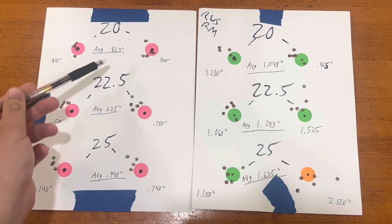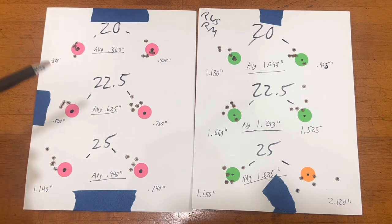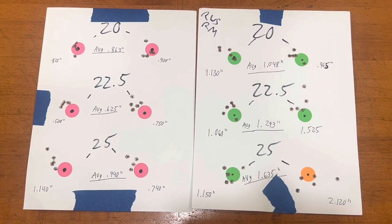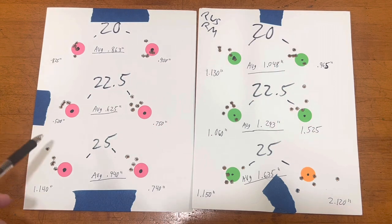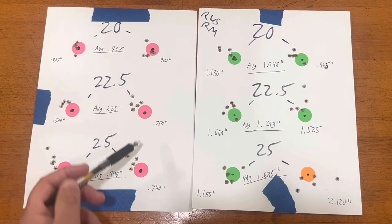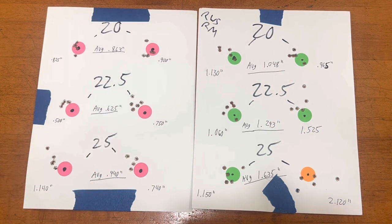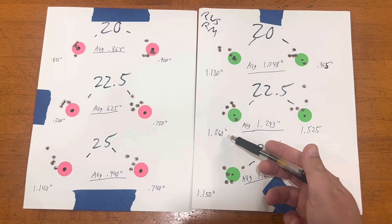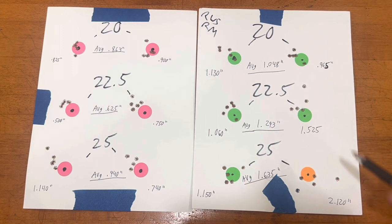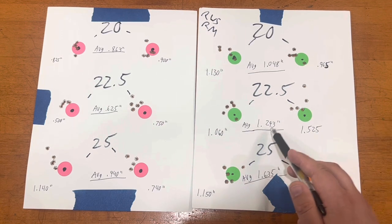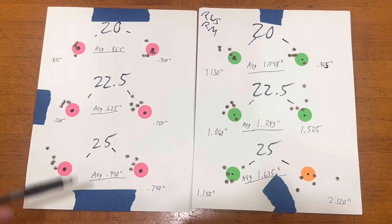Moving to 22.5 inch-pounds, looking at the Hogue, we shot a half-inch group and a three-quarter inch group. Moving to the KRG at 22.5 inch-pounds, we shot an inch group and also an inch and a half group. So again, our averages here are well over an inch compared to the Hogue.